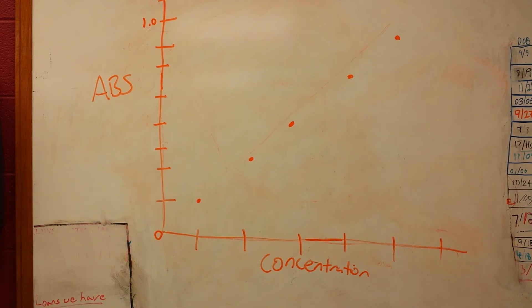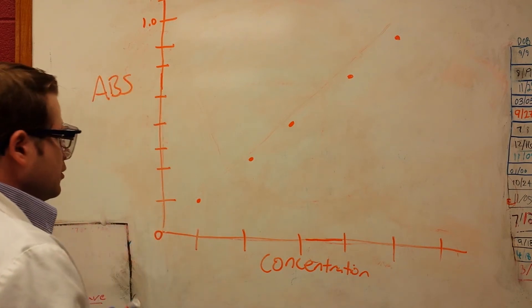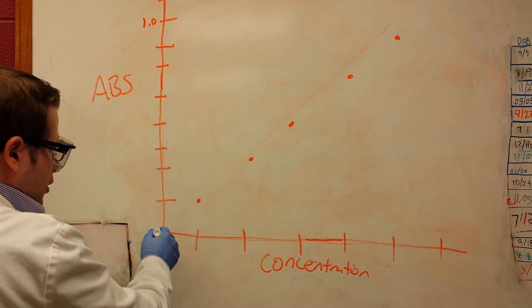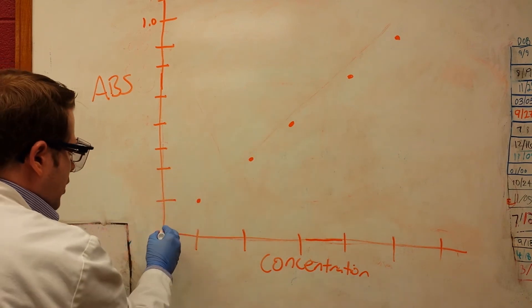When we get our data, we'll want to have the absorbance, abbreviated ABS, on the y-axis, and our concentration on the x-axis. What you'll want to do is draw a basic trend line. We'll want to make sure we start at the origin, 0, 0, and have it go through as many lines as possible.